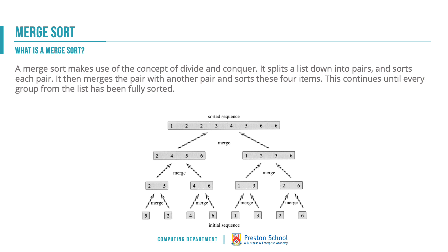A merge sort makes use of a concept called divide and conquer - breaking the problem down quite literally. We start by breaking the numbers down into pairs: five and two, four and six, one and three, and two and six. We merge five and two together, sorting them as we merge. We then merge four and six, and so on. We then merge those pairs into fours, sorting as we go. In the exam, if asked to sketch a merge sort, this diagram is the sort of thing they would expect to see.